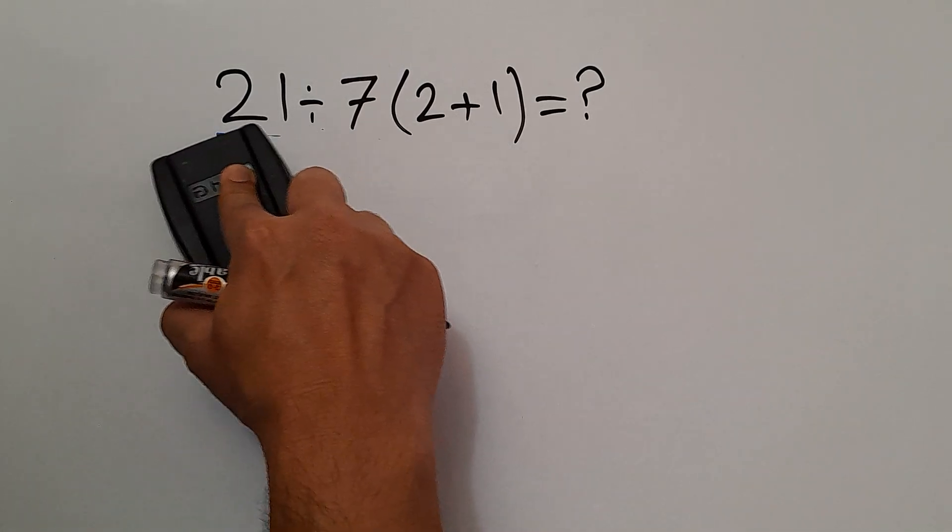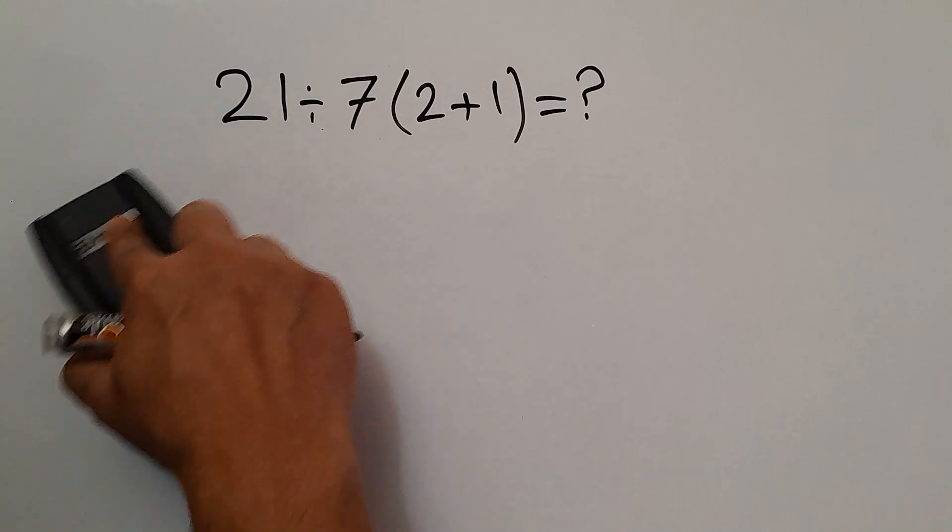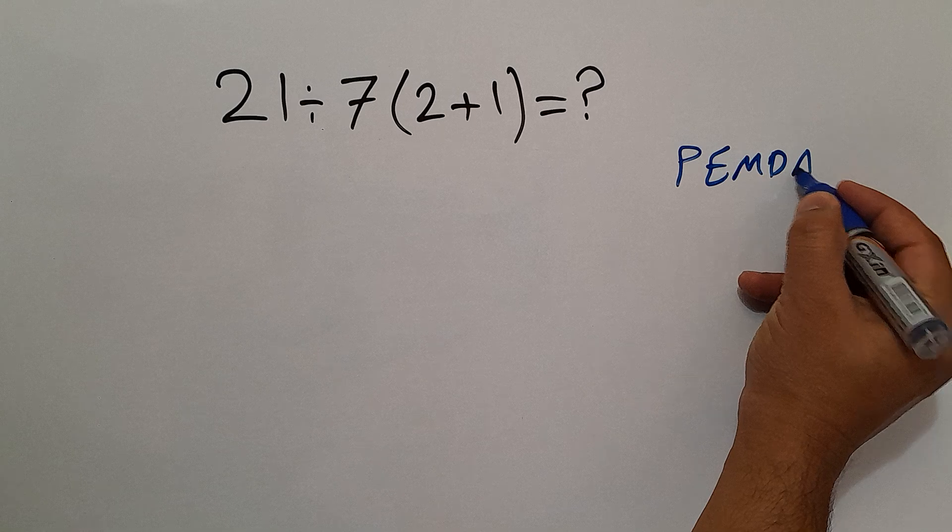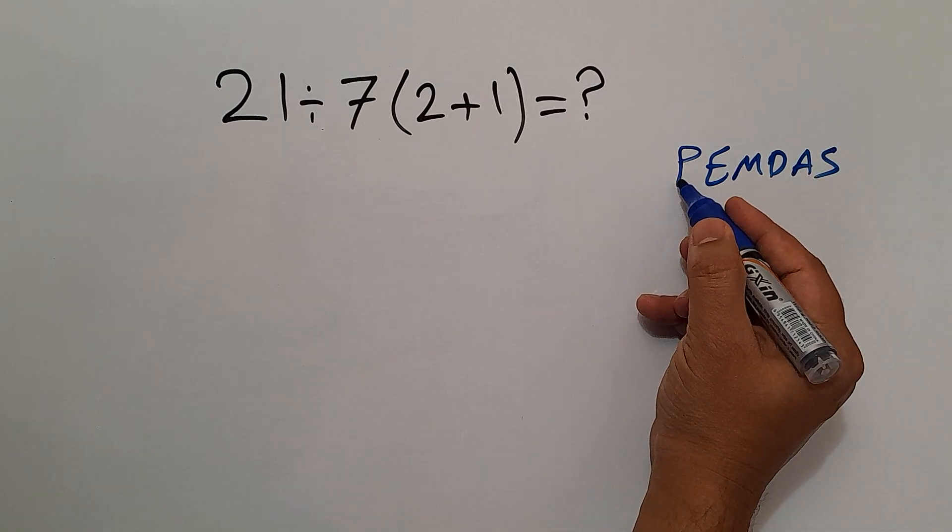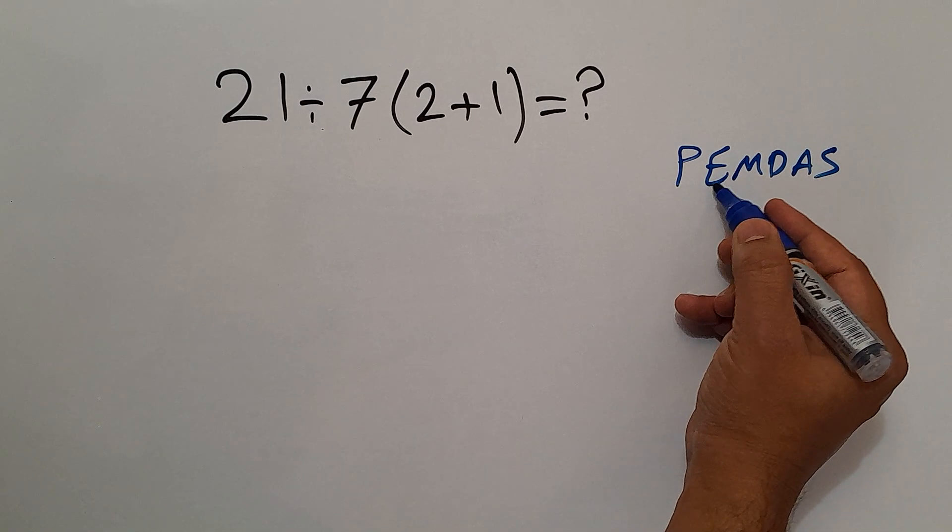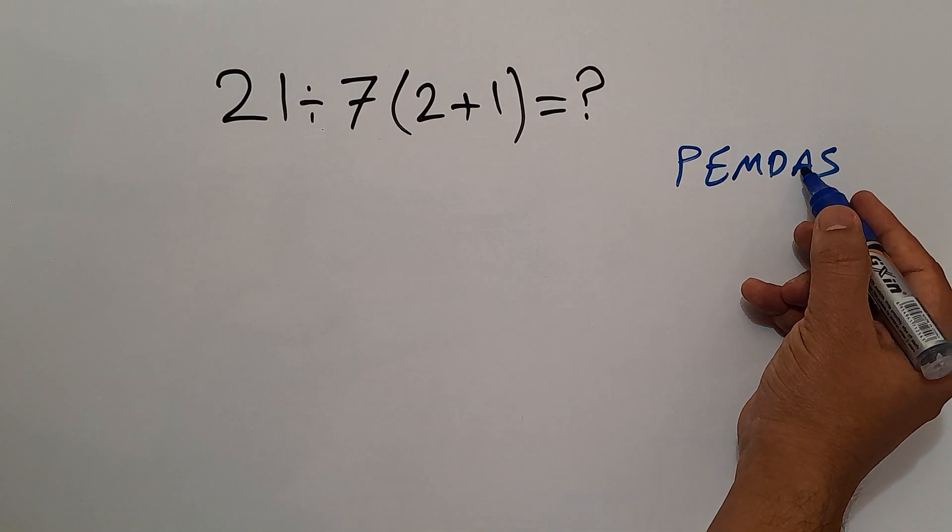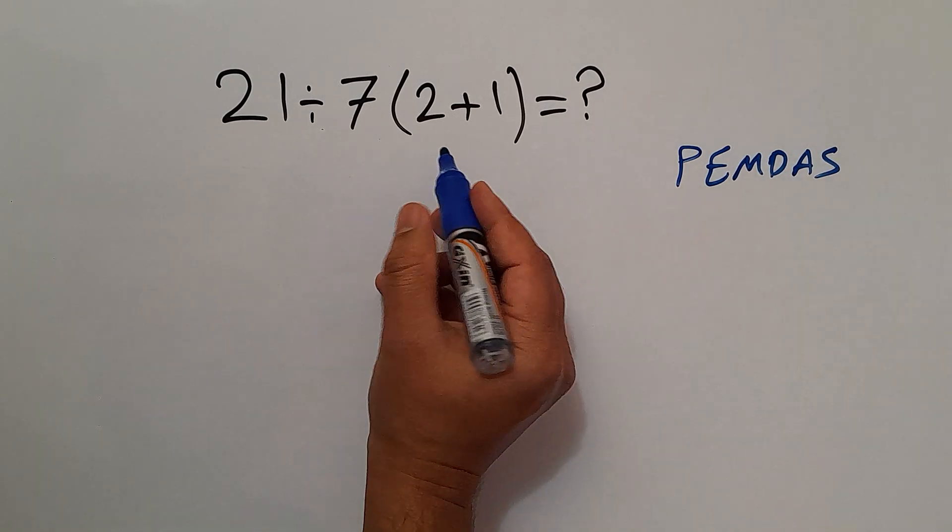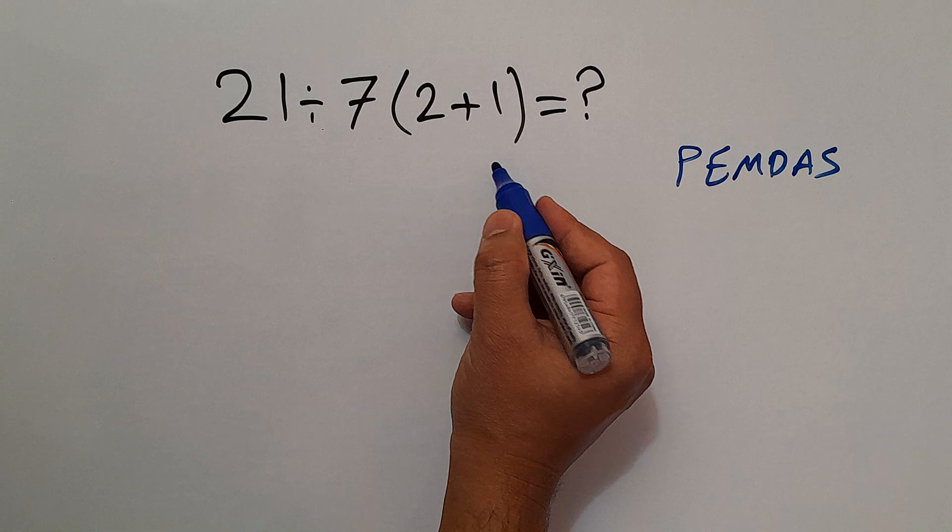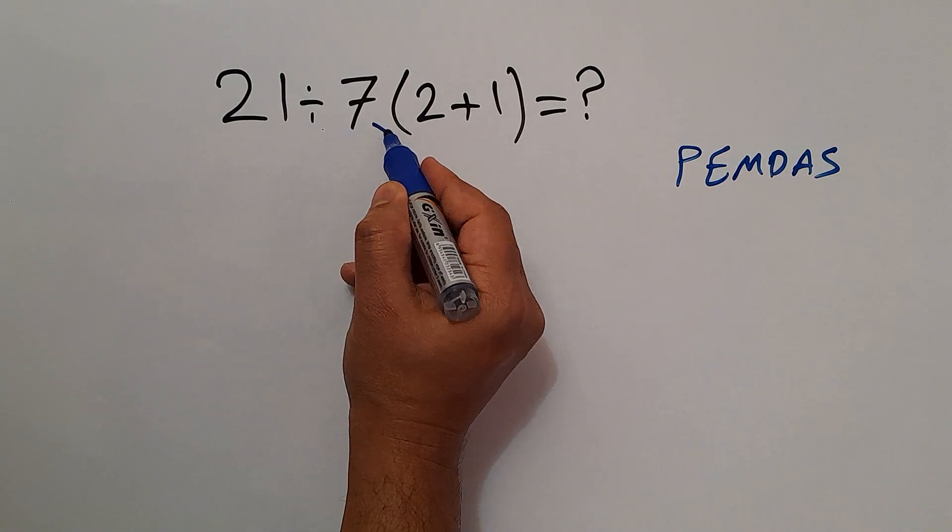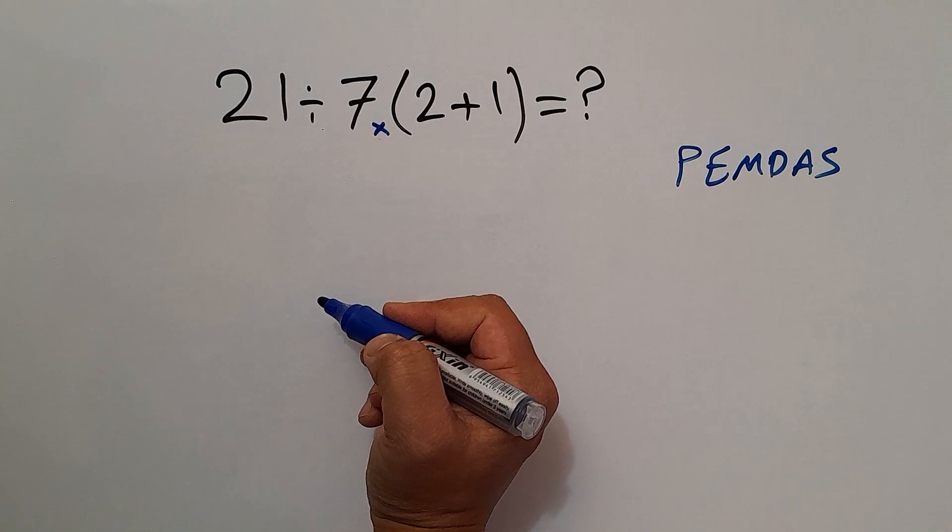Because according to the order of operations which is PEMDAS, we first do parentheses, then exponents, then multiplication or division, and finally addition or subtraction. So here first we do these parentheses, then this division, and finally this multiplication.